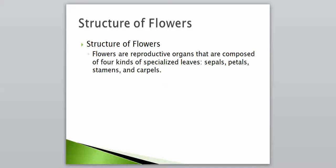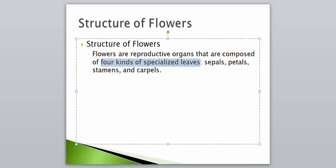Flowers are the reproductive organs, and they're composed of four kinds of specialized leaves. It's going to be important that the flower is actually made up of four kinds of specialized leaves, and they're known as sepals, petals, stamens, and carpels. We're going to take a look at each one of those in depth, and we're going to take a look at some other parts of the flower as well.